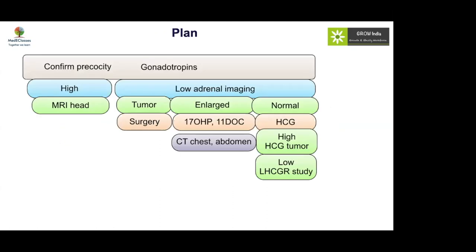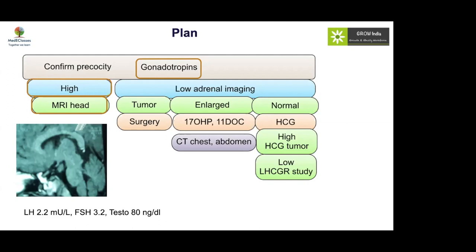Investigations showed LH slightly elevated, FSH elevated, and testosterone 80 ng/dL — all pointing to central precocious puberty. MRI brain was performed and showed a hematoma, which was the cause of the central precocious puberty. Management requires close liaison with neurosurgeons. If the hematoma is small, GnRH analogues can be used to suppress puberty while monitoring with neurosurgeons.